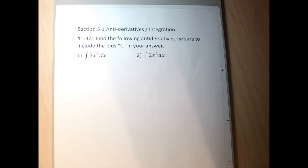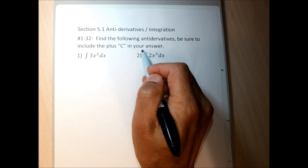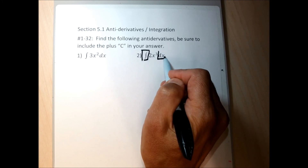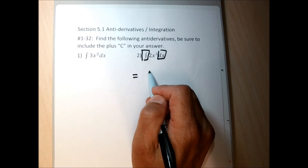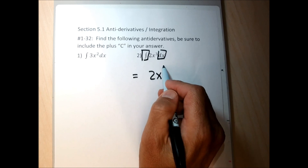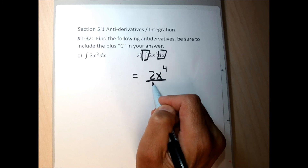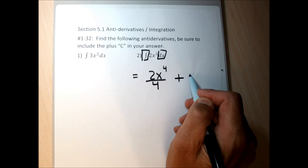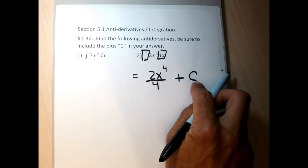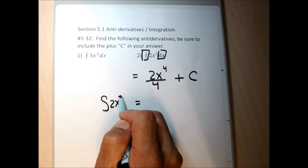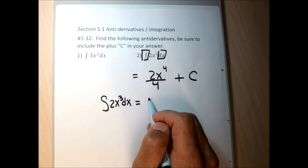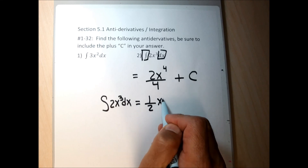For the first problem, the integral of 2x cubed dx. The integral sign and the dx tell me to find a function that has 2x cubed as its derivative. I add one to the exponent: 3 plus 1 is 4. I divide by the new exponent 4, and put on a plus C. So the antiderivative of 2x cubed dx equals x to the fourth over 2, plus C.